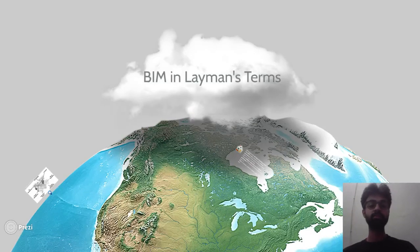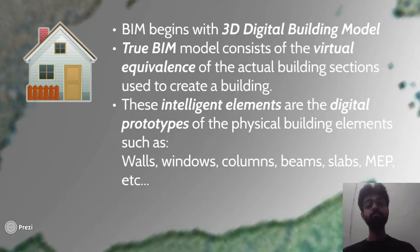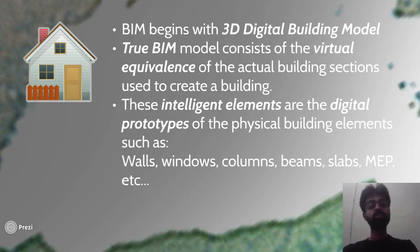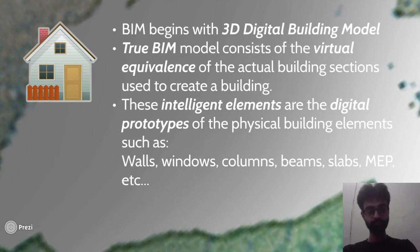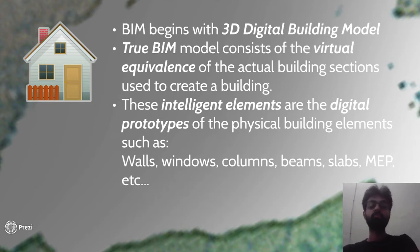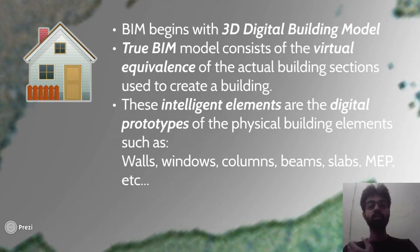Let's see BIM in layman terms. BIM begins with a 3D digital building model. It is a true BIM model which consists of the virtual equivalence of the actual building sections used to create a building. These intelligent elements are digital prototypes of physical building elements, such as walls, windows, columns, beams, slabs, and all other MEP fittings. We combine all those digital models to make a whole building, which can be called a BIM model.